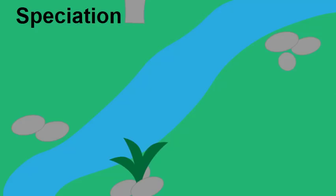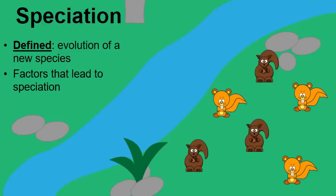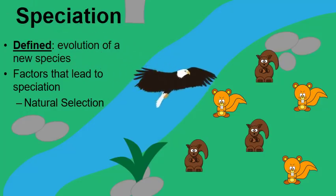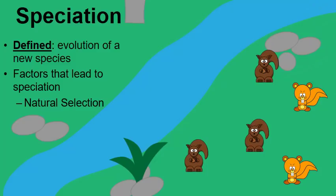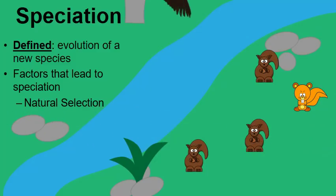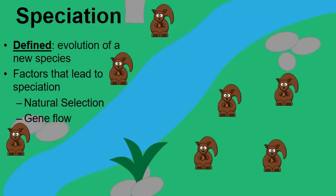Now that we understand what a species is — a group of organisms that can produce fertile offspring — we can talk about speciation, which is the evolution of a new species. Throughout this video we'll discuss several factors that lead to speciation. One of those factors is natural selection. Here we have some squirrels living in an area where eagles are preying on them, and in this case the brown squirrels survived better than the orange ones.